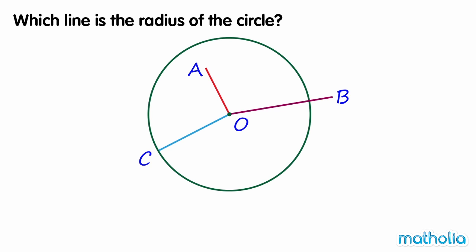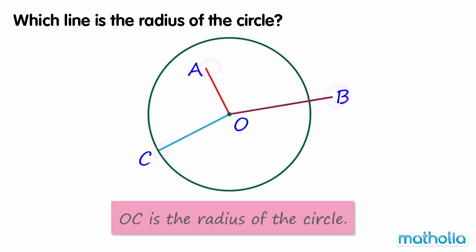Which line is the radius of the circle? Line OA is not a radius as point A is inside the circle. Line OB is also not a radius as point B is outside the circle. Line OC is a radius as point C is on the circle.